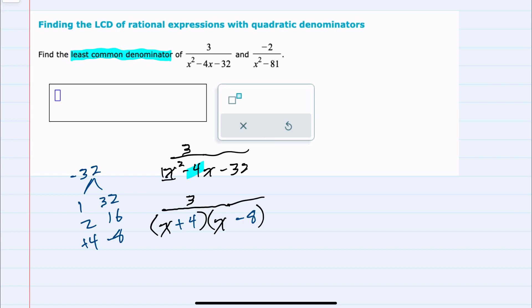That would multiply to be negative 32, and when distributing I would get 4x and minus 8x, which would combine to be this minus 4x. So this factorization works, and we've factored the first expression.